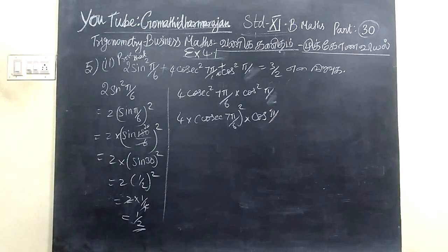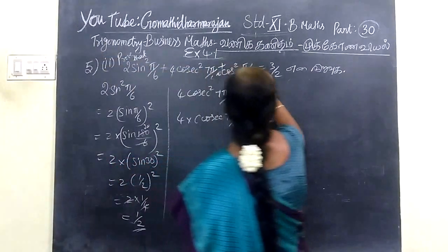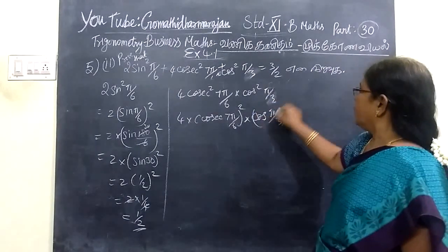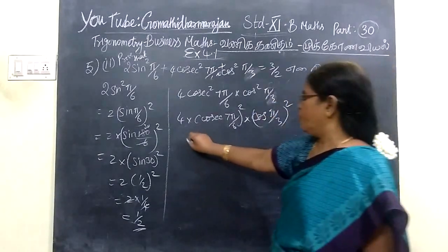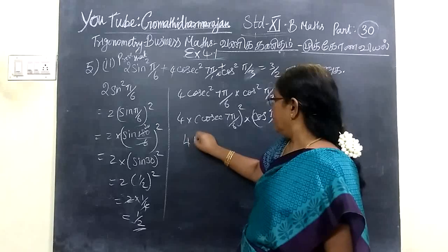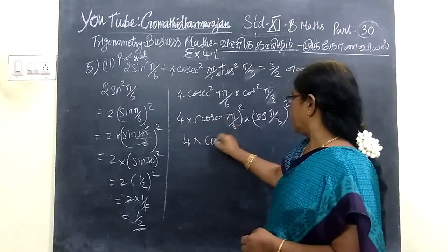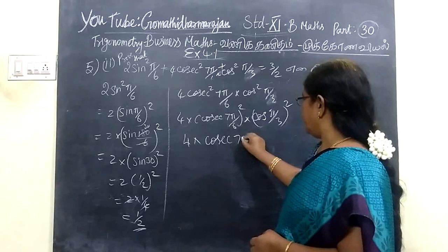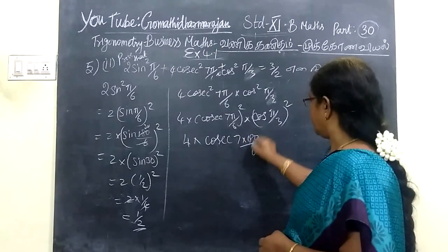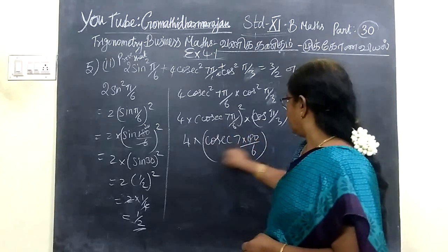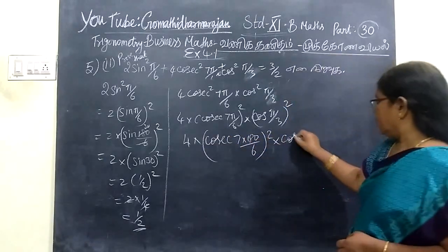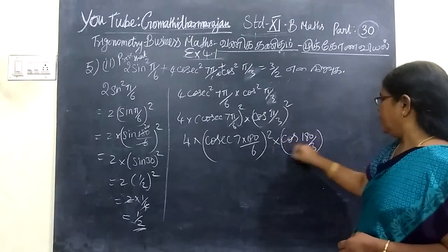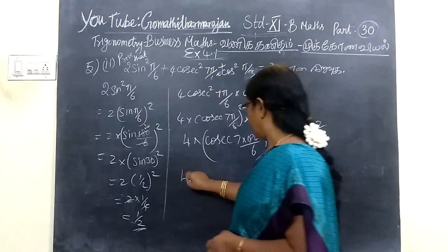Here it is 5π/3. So this is 5π/3. Now, cos²(5π/3) — and for sin²(7π/6): 7π/6 means 180 by 6, which is 210°. Then cos²(180/3) = cos²(60°).